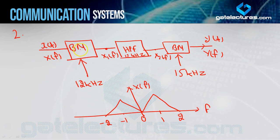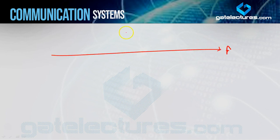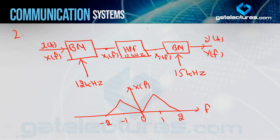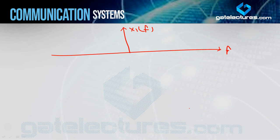Let X1F be the output of the first balanced modulator, X2F the output after the HPF, and YF the final output. To find X1F: the balanced modulator takes XF (with components at 0, 1, 2 kHz) and the 12 kHz signal, and adds and subtracts. So we shift XF by +12 kHz giving components at 12, 13, 14 kHz.